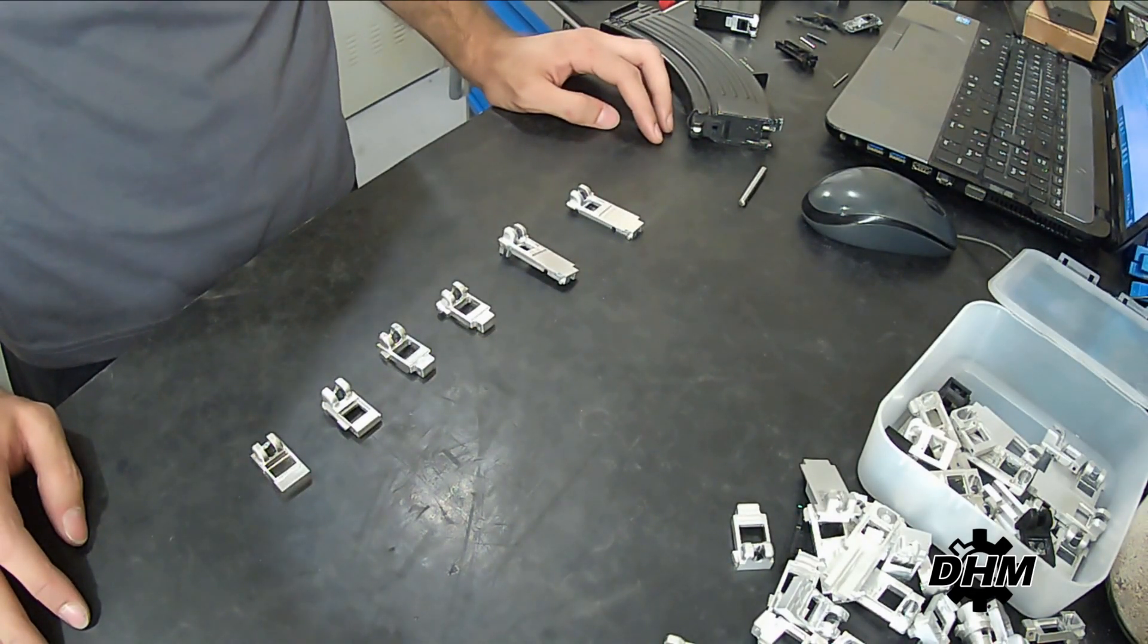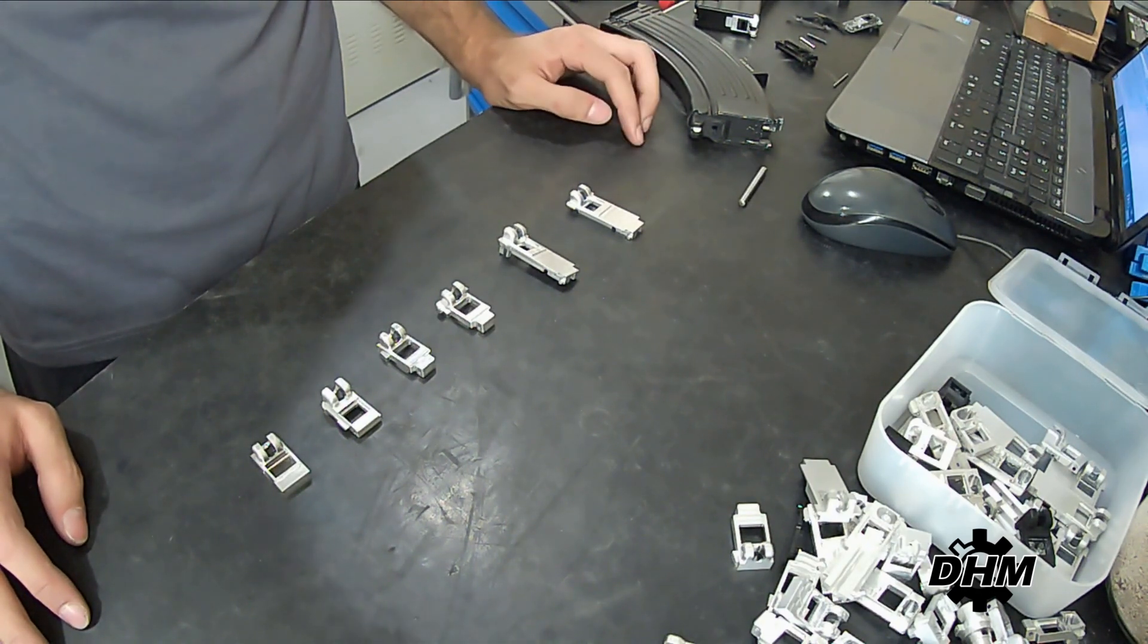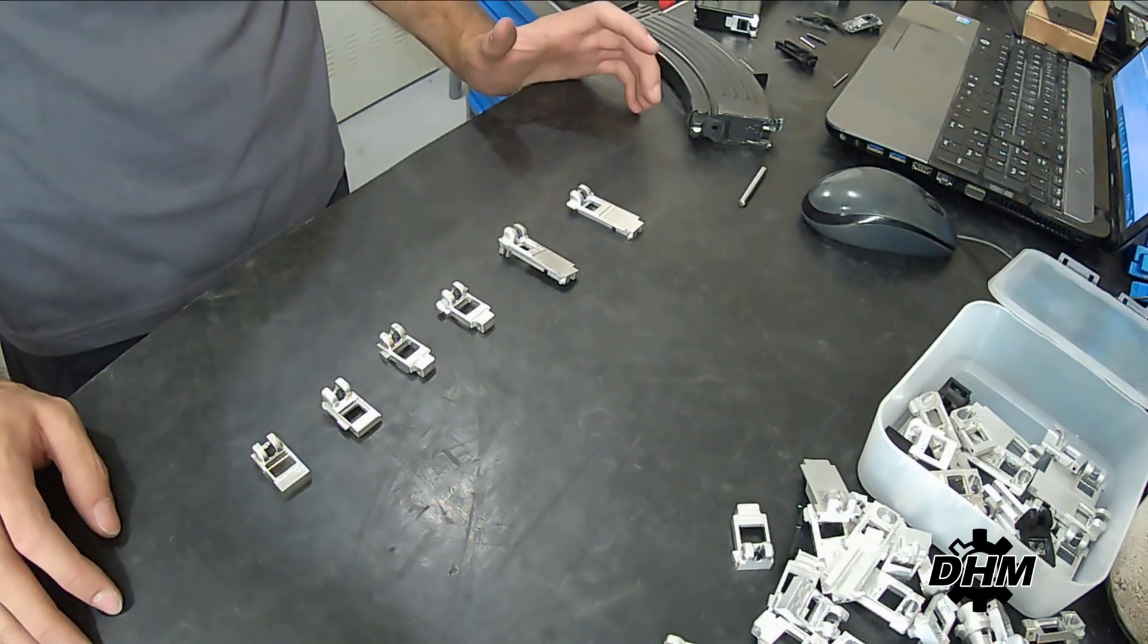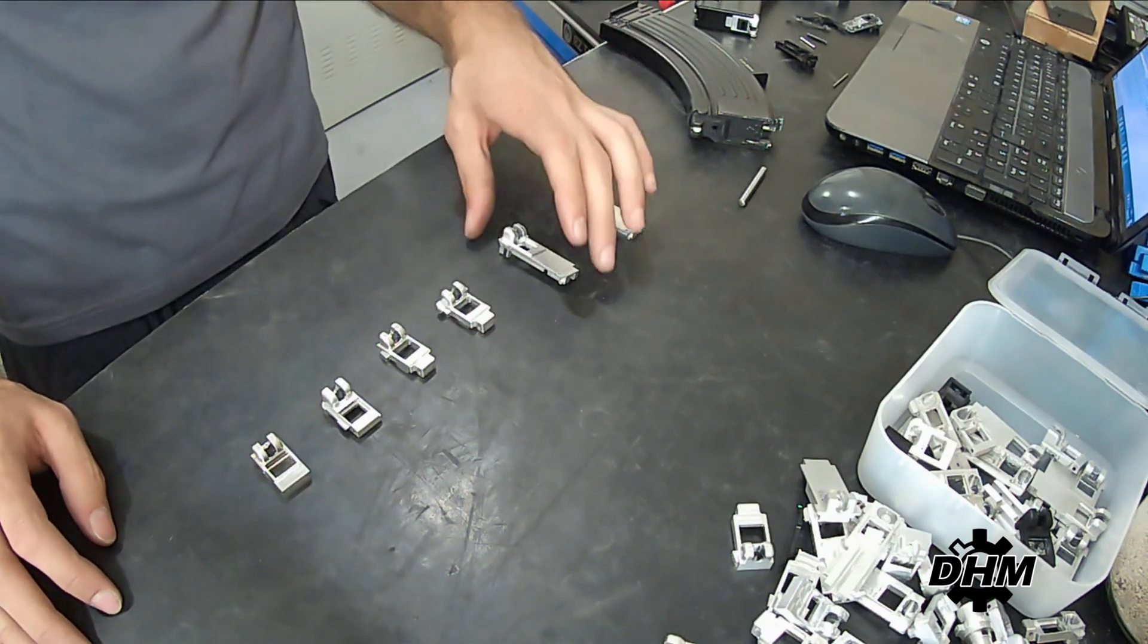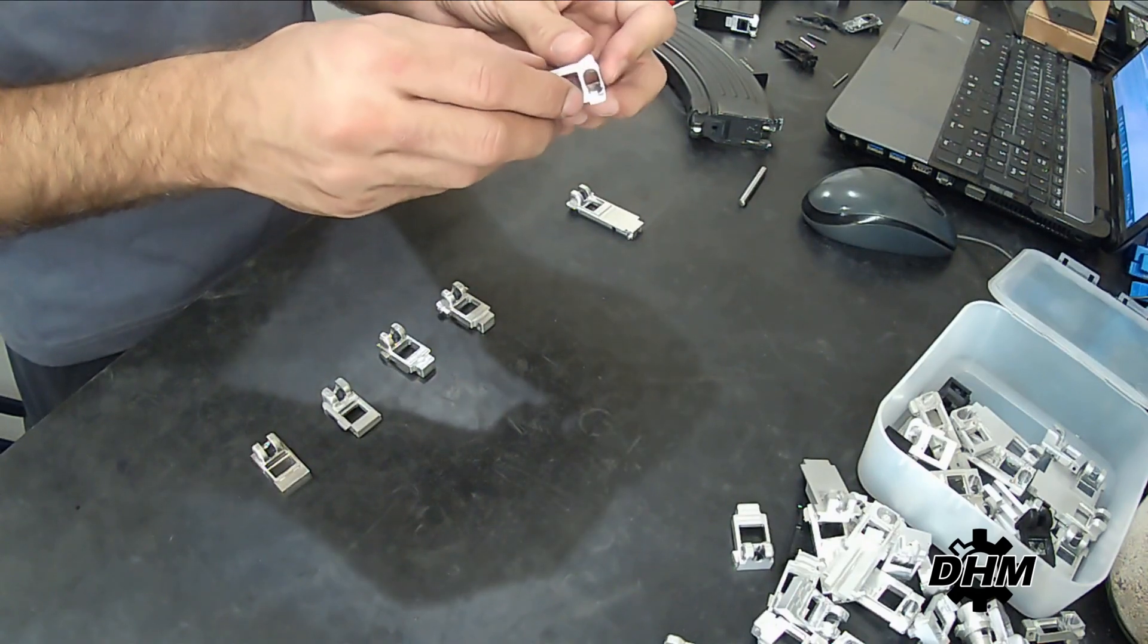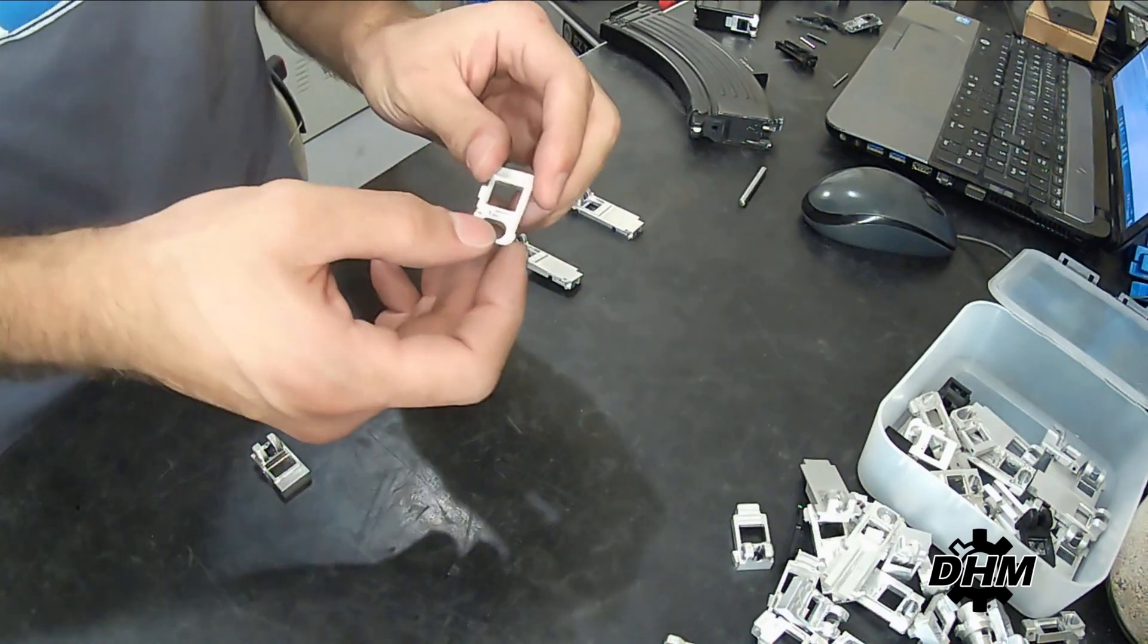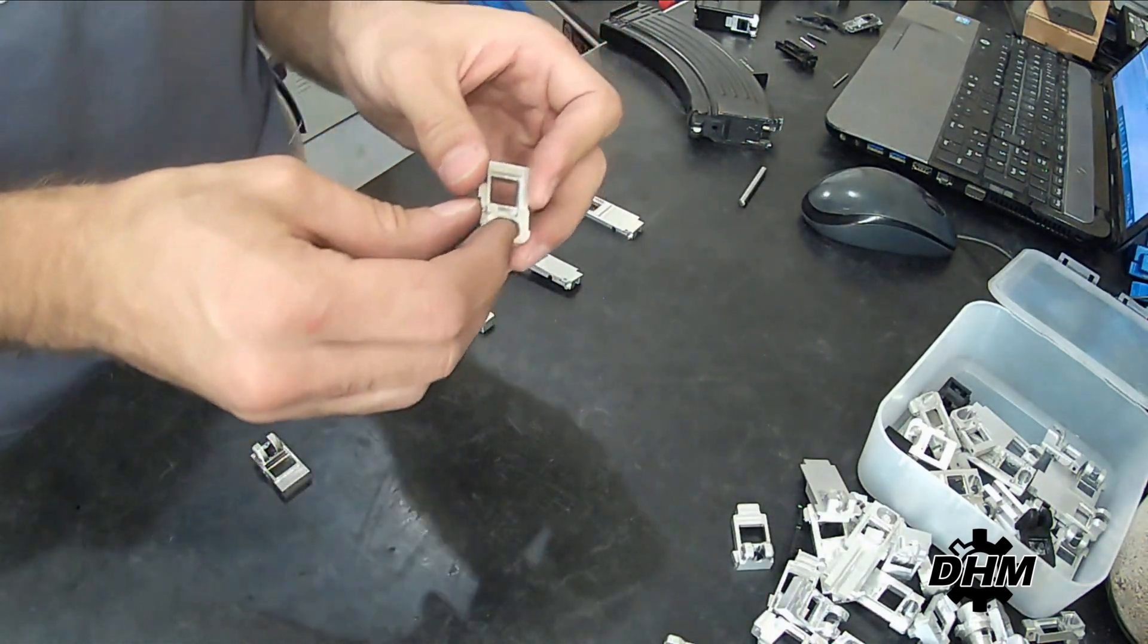In all the lips I have implemented some improvements over the original design, always looking for making the best model in terms of strength and performance. For example, the M4 version 1B is specifically designed to eliminate the stuck BBs problems. The same happened on the AKM.